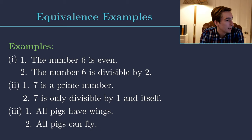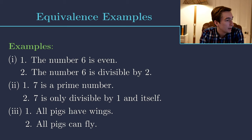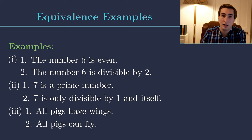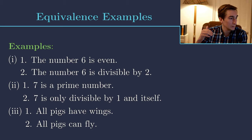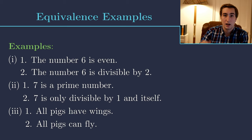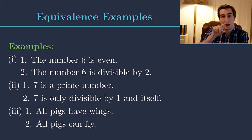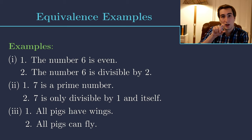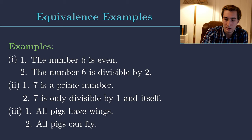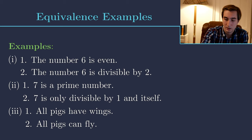Example 3 involves two false statements: 'All pigs have wings' and 'all pigs can fly.' Since 'all pigs have wings' is false, and a falsehood can imply anything, it implies 'all pigs can fly.' Going the other way, 'all pigs can fly' is also false, so it also implies 'all pigs have wings.' Both directions are true, so these two statements are equivalent. This corresponds to the false-false case of the equivalence operator, which maps to true — two false statements can be equivalent.